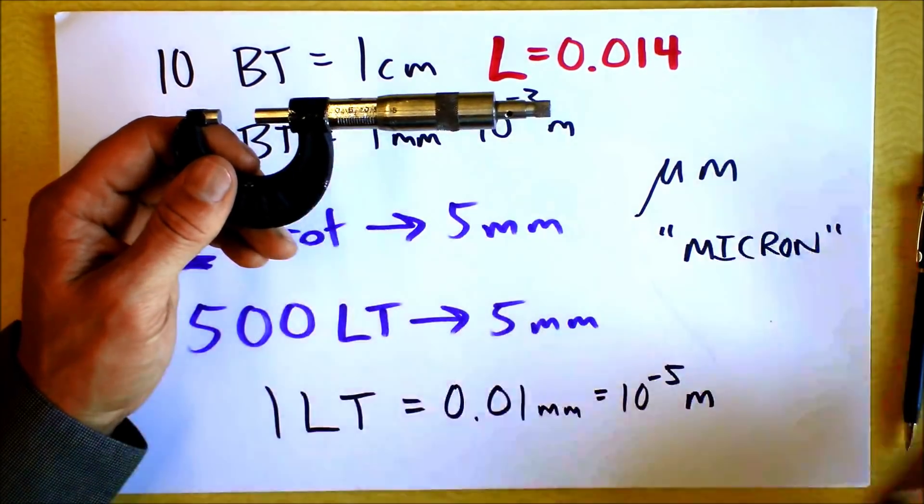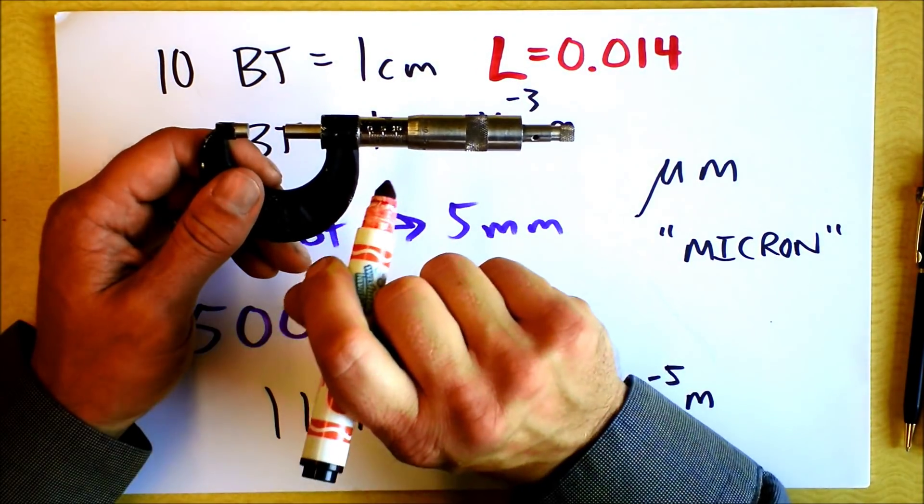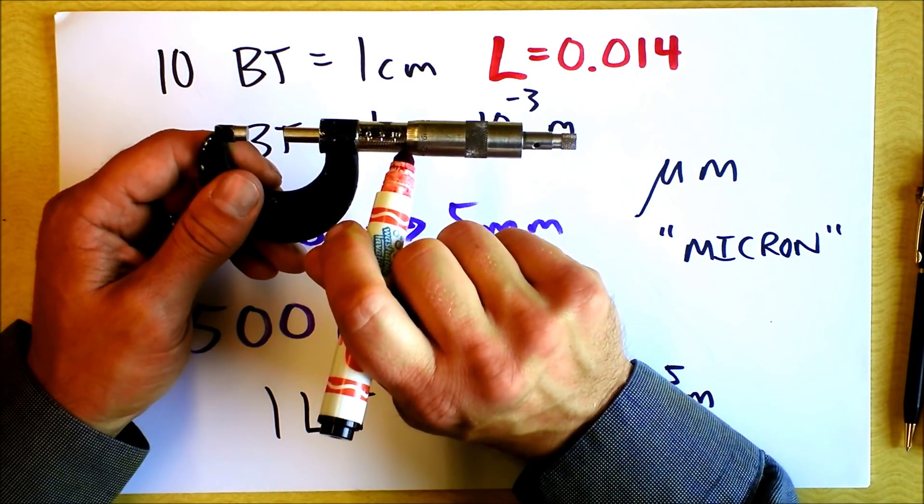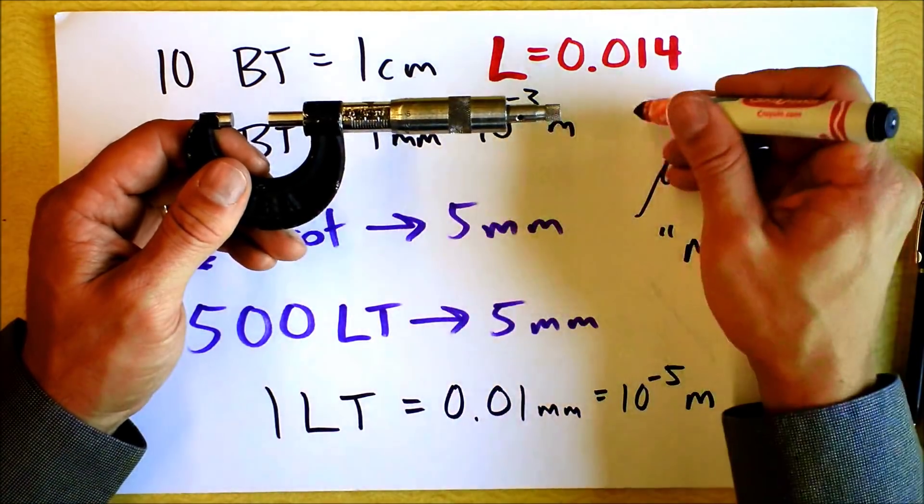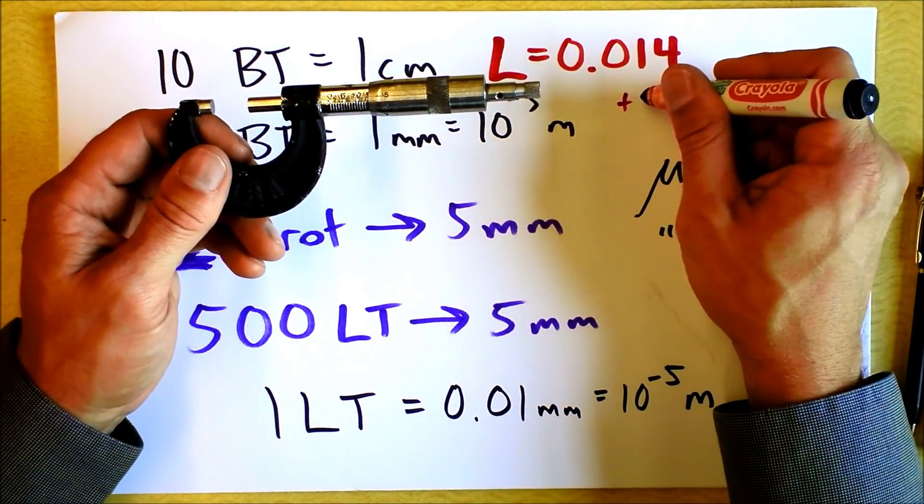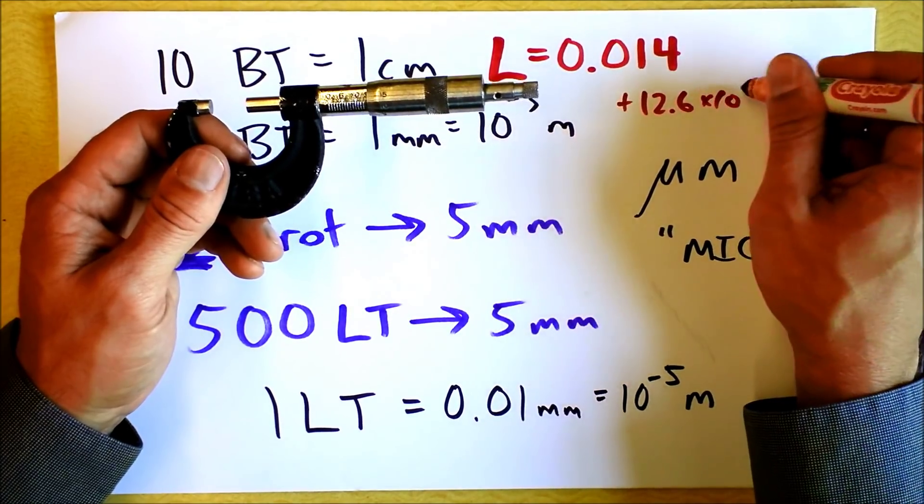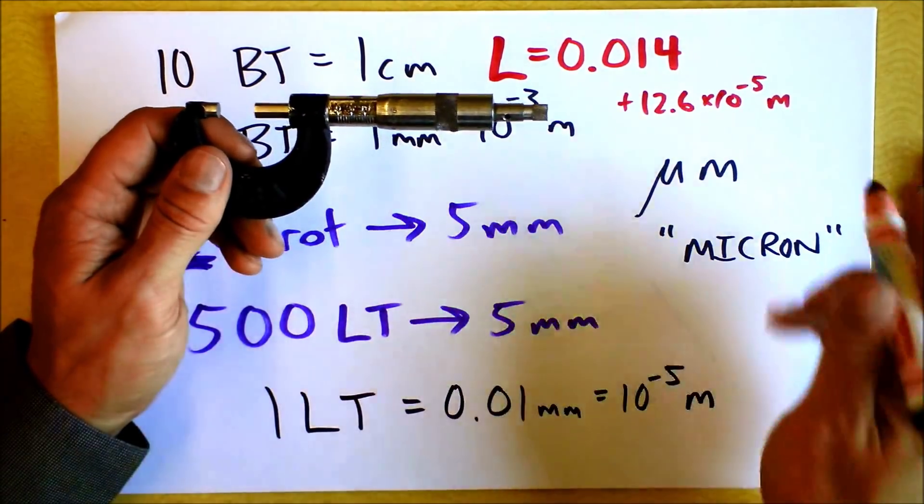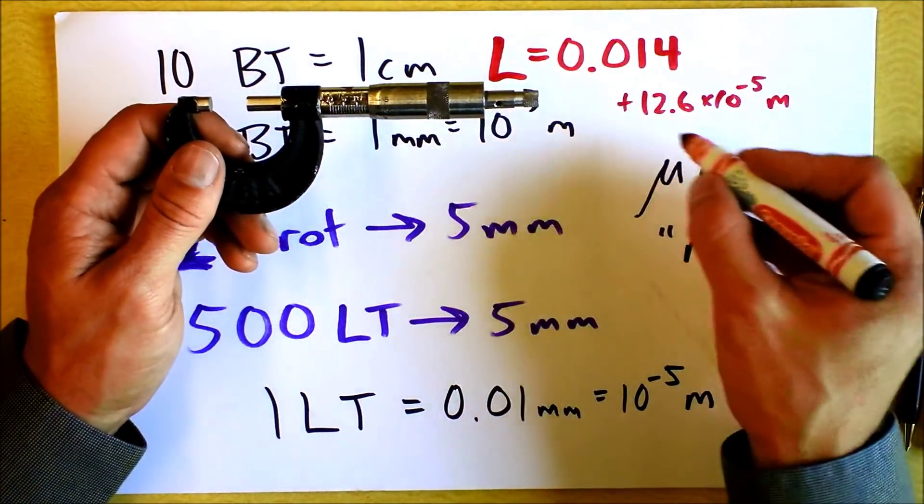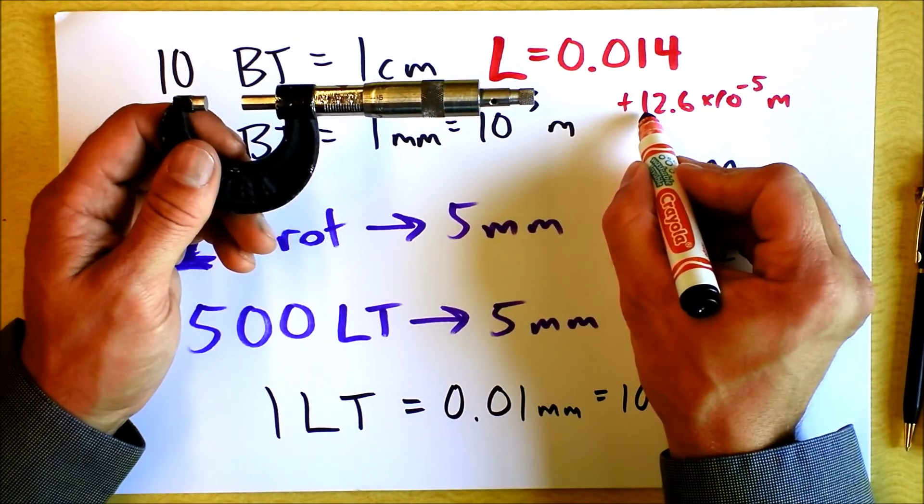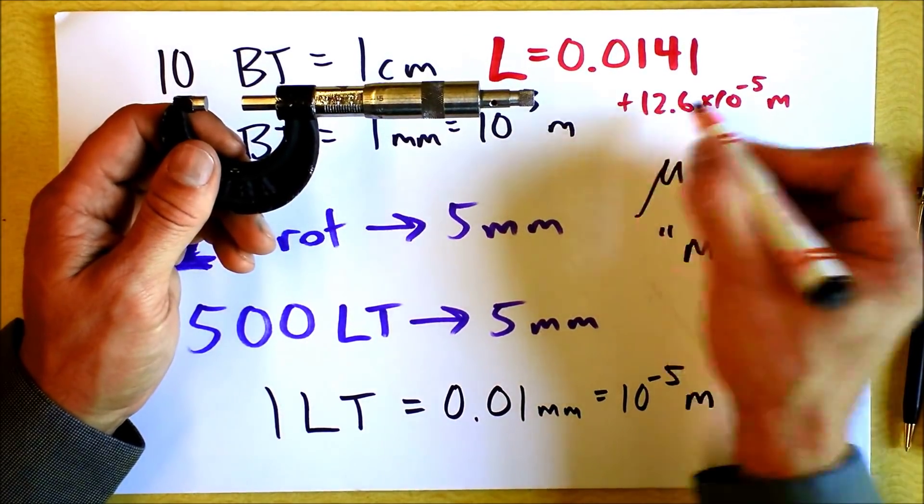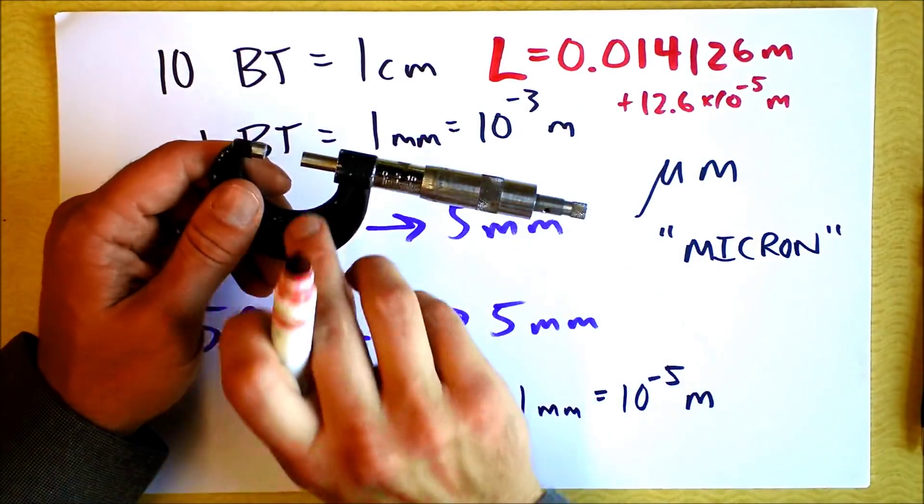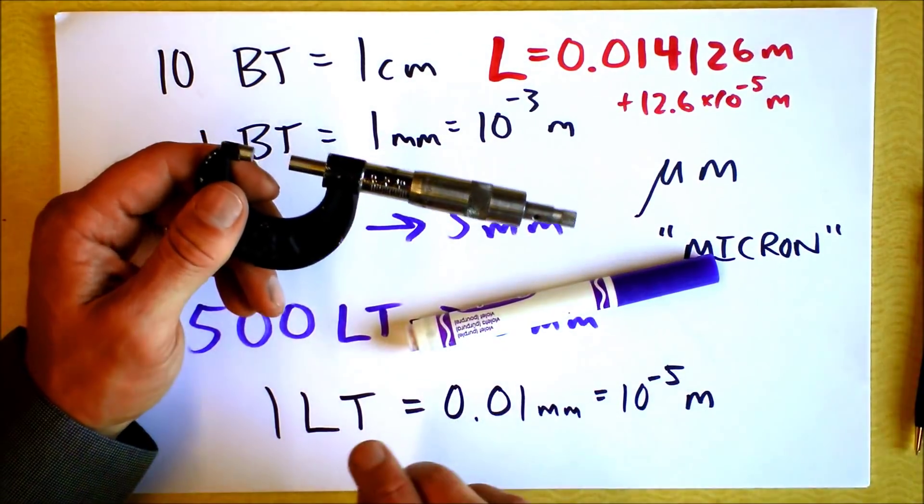And then I have to get the last digits by checking little ticks. And it looks like the little ticks have gone from 0 up to a little more than 12 little ticks, 12.6 little ticks. Okay, so then plus 12.6 times 10 to the negative fifth meters. Those are my little ticks. And I got 12.6 of them. So I'm just going to add on more digits here. And that is the width of a Crayola marker.